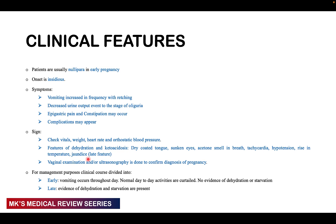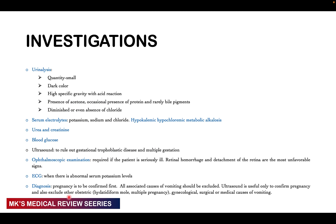For management purposes, the clinical course is divided into early — where vomiting occurs throughout the day and normal activities are curtailed, with no evidence of dehydration or starvation — and late, where dehydration and starvation are present. Investigations include urinalysis, which yields small quantities of concentrated, dark-colored urine with high specific gravity and acid reaction; there may be ketones, occasionally proteins, rarely bile pigments, and diminished or absent chlorides. Serum electrolytes — potassium, sodium, and chloride — tend to be reduced, giving a hypokalemic, hypochloremic metabolic alkalosis. You also want urine creatinine, blood glucose, and an ultrasound to rule out gestational trophoblastic disease and multiple gestation.